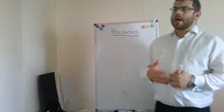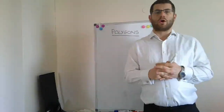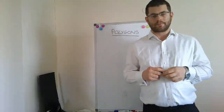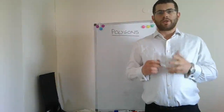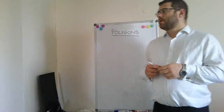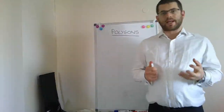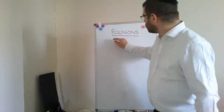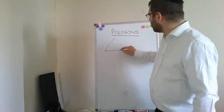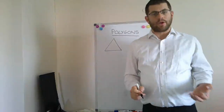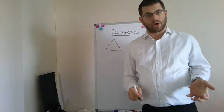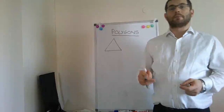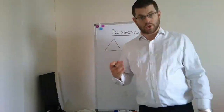If we call this section 'polygons' we should really start by asking ourselves what a polygon is. A polygon is a shape that is made up of straight lines only. Even a triangle is made up of straight lines — any shape you can make up of straight lines is a polygon. The sides don't have to be the same length, and if they are the same length, that's a special type of polygon we will meet shortly.